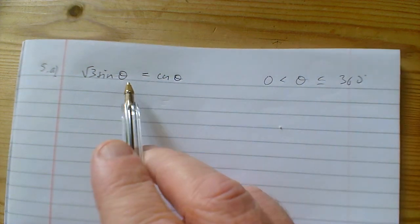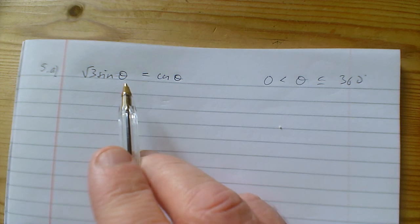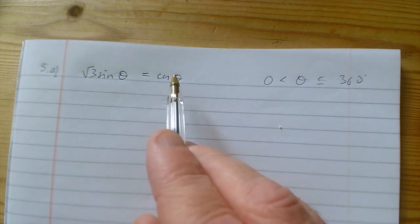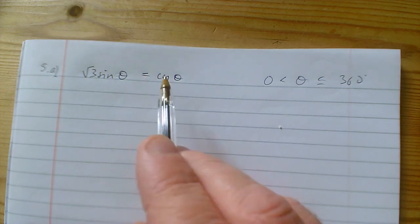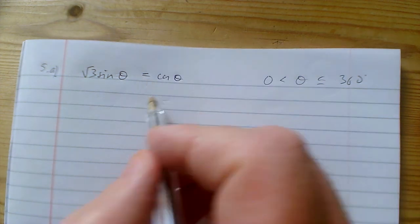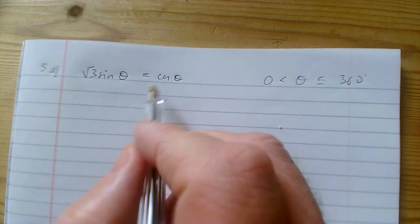We've only got two identities we can use. One is the Pythagorean identity sin²θ + cos²θ = 1, and the other is tan θ = sin θ / cos θ. We're going to use that second one in this case.